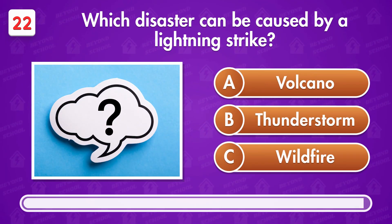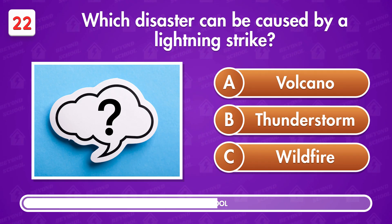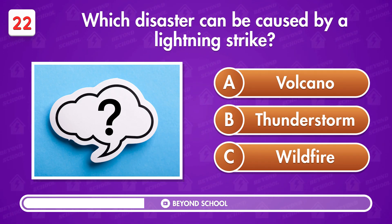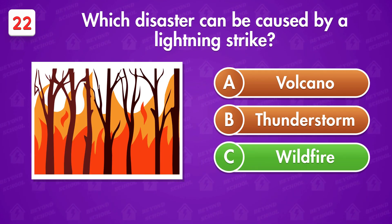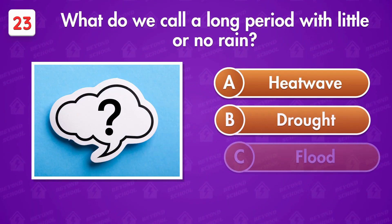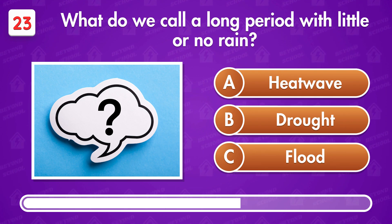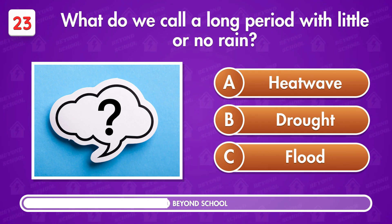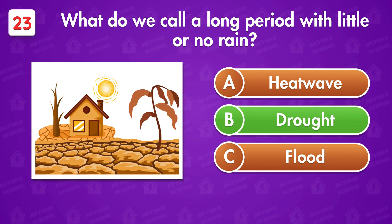Which disaster can be caused by a lightning strike? Option C — Wildfire. What do we call a long period with little or no rain? Drought.